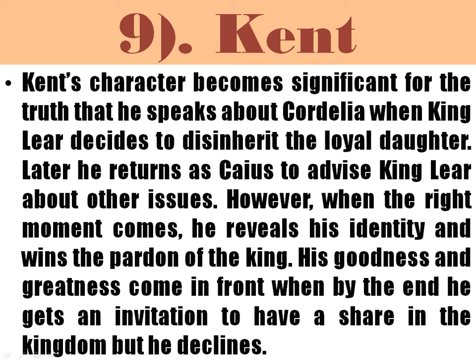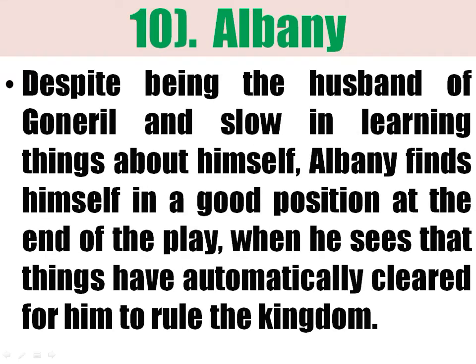Kent is a character who becomes very significant because he speaks the truth. He condemned King Lear for banishing Cordelia, and King Lear then decided to banish him from the kingdom as well. Kent later returned under the disguised name Caius to advise King Lear on other issues. When the right moment came, he revealed his true identity and told King Lear that he was the Kent who had been banished. He is a very honest and good man — his goodness is evident when, at the end, he receives an invitation to share in the kingdom but declines.